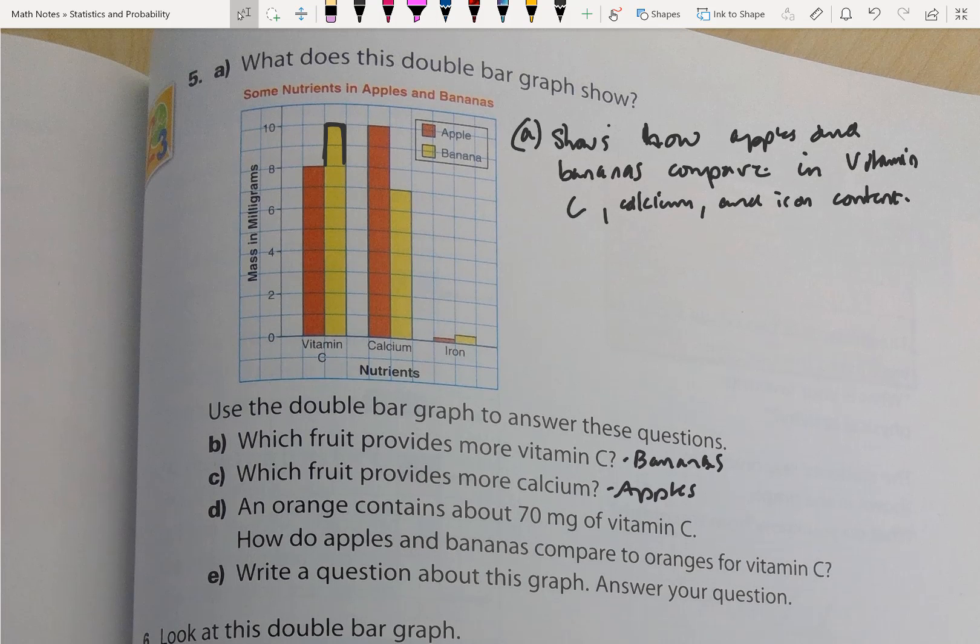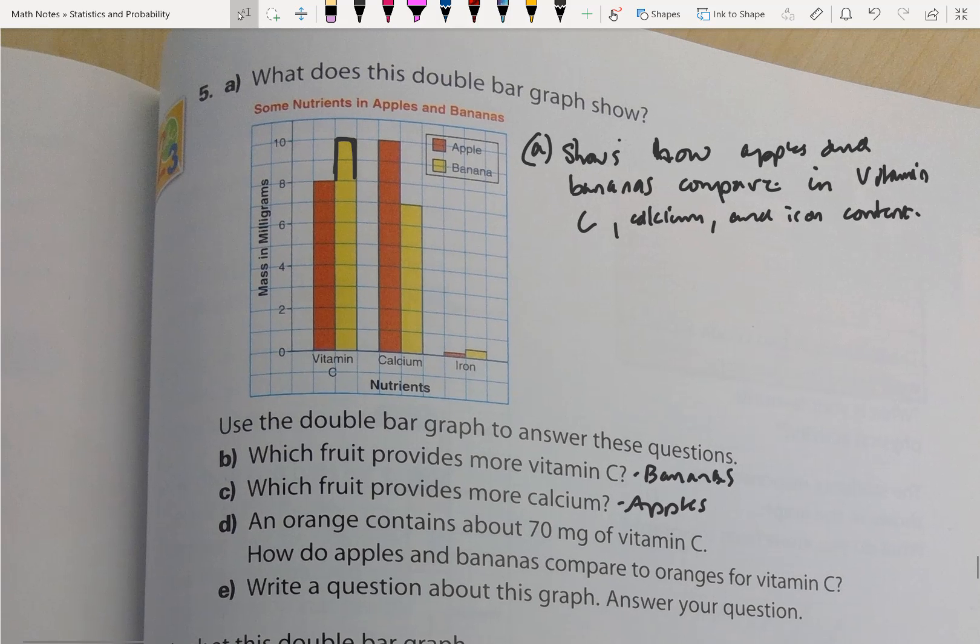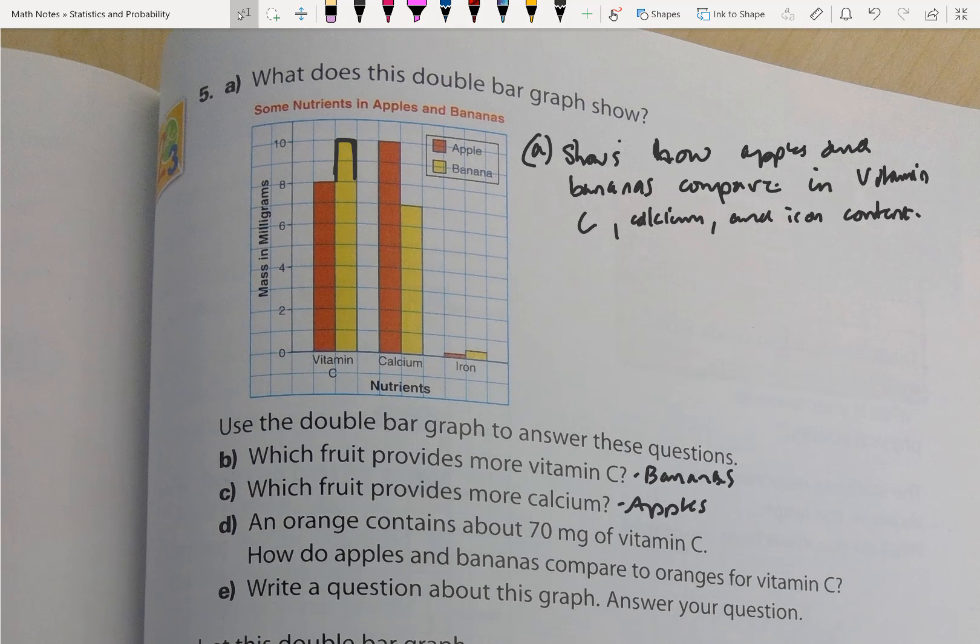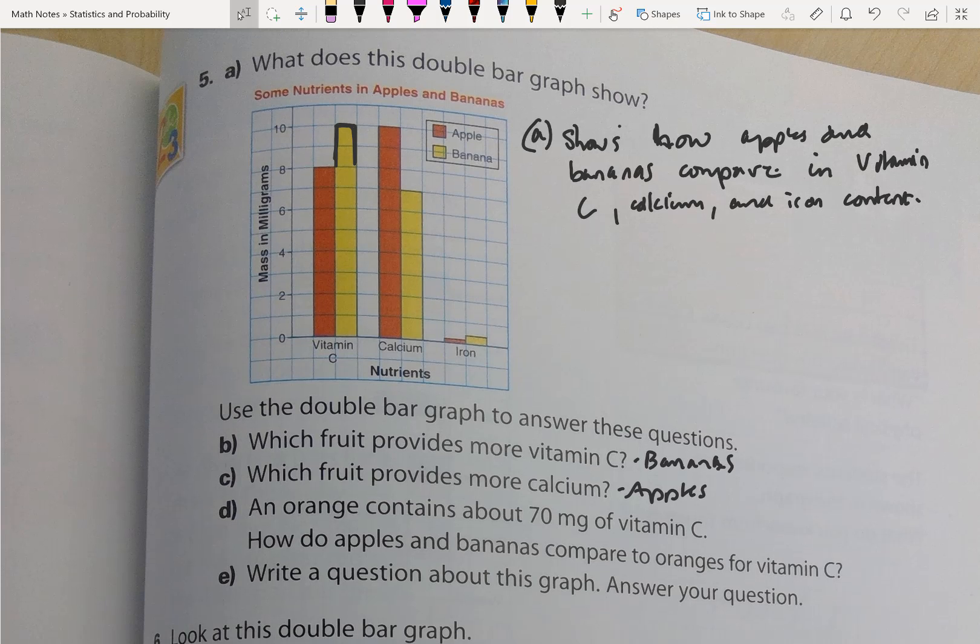Now question D: An orange contains 70 milligrams of vitamin C. How do apples and bananas compare to oranges for vitamin C? We can see mass in milligrams and nutrients. So we can say apples and bananas have much less vitamin C than oranges.